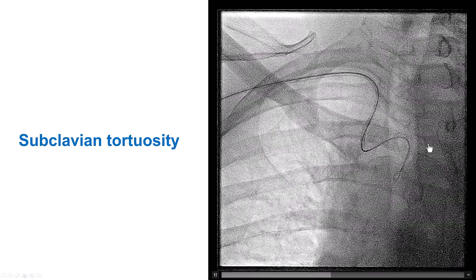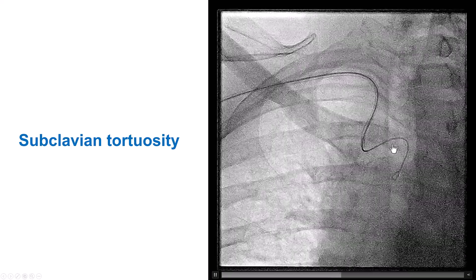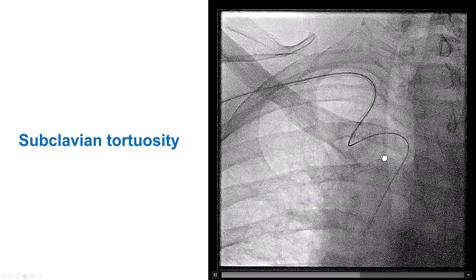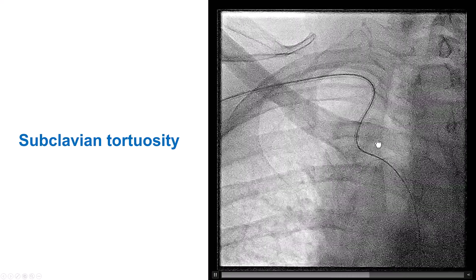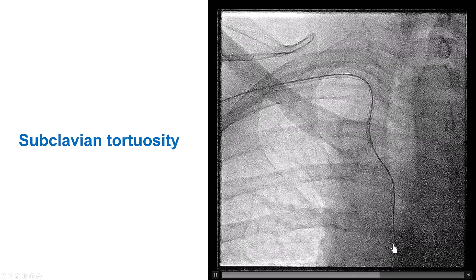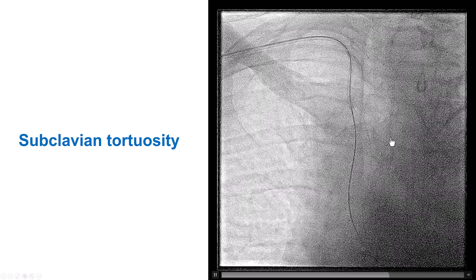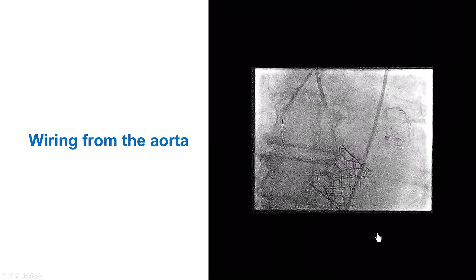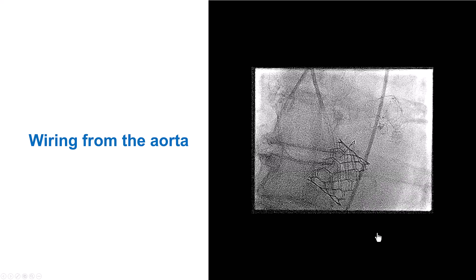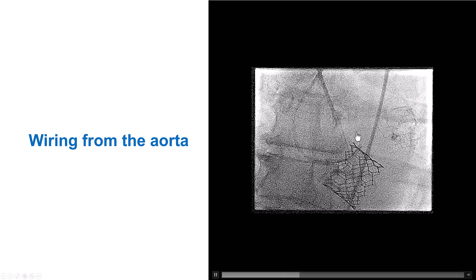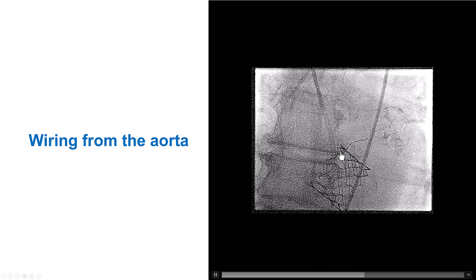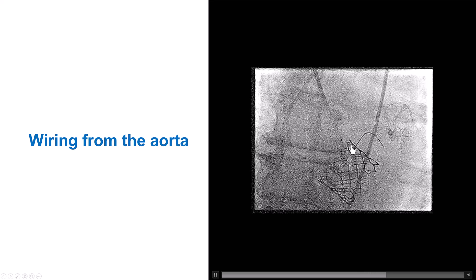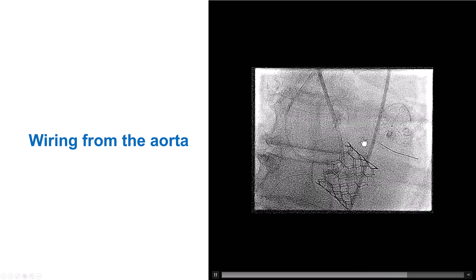There was quite significant subclavian tortuosity, but we were eventually able to advance the guide wire into the ascending aorta, and the tortuosity did straighten. We were able to engage the right coronary artery through the radial axis, and then obtained femoral access and tried to engage the left main.